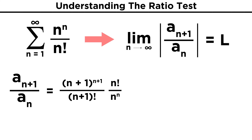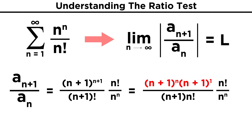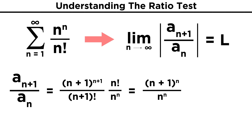Now dividing by a fraction is the same as multiplying by its reciprocal, so let's flip this denominator and bring it up here. We should be able to cancel some things if we get clever. We have n plus one factorial as well as n factorial. Well we know that n plus one factorial will be n plus one times n times n minus one and so forth. So really, we can just say that this is equal to n plus one times n factorial. Then, on the top, raising this binomial to the n plus one power is the same as n plus one to the n power times n plus one to the first power. Now we can cancel out an n plus one from top and bottom, and we can do the same with n factorial, leaving us with n plus one to the n power over n to the n.